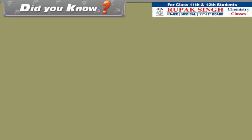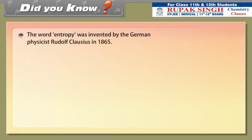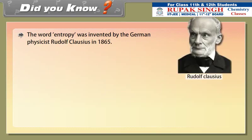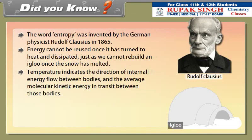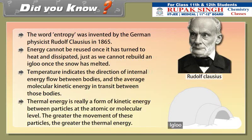Did you know? The word entropy was invented by the German physicist Rudolf Clausius in 1865. Energy cannot be reused once it has turned to heat and dissipated — just as we cannot rebuild an igloo once the snow has melted. Temperature indicates the direction of internal energy flow between bodies and the average molecular kinetic energy in transit between those bodies. Thermal energy is a form of kinetic energy between particles at the atomic or molecular level; the greater the movement of these particles, the greater the thermal energy.